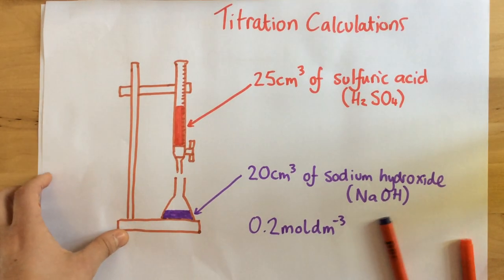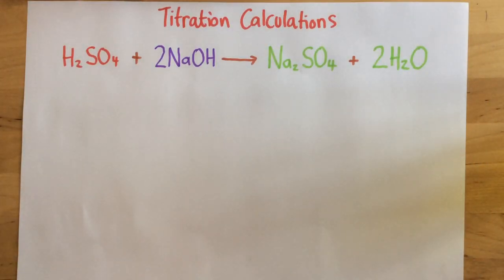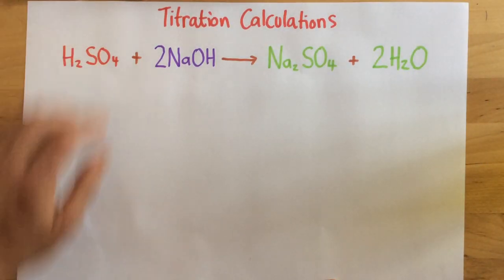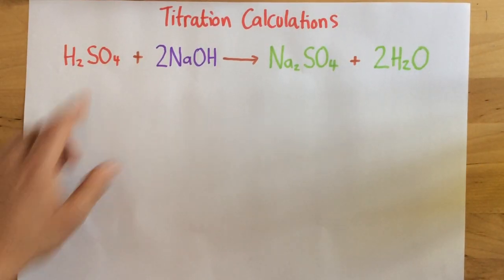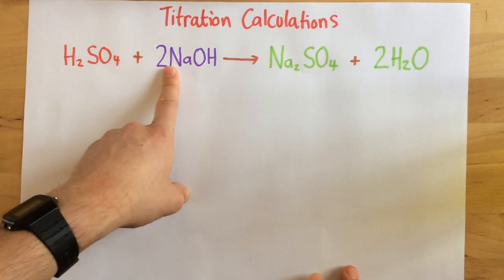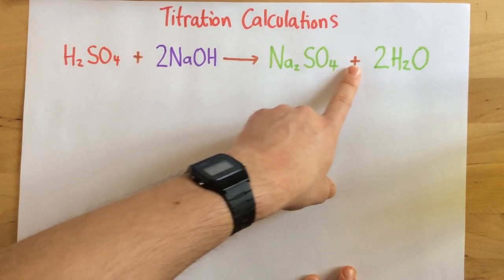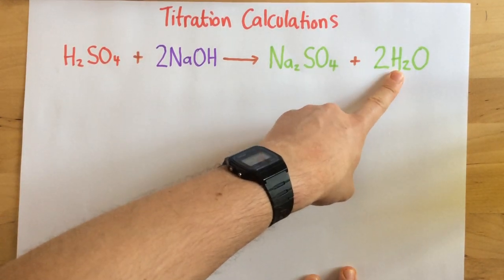The first thing you need to do is write the balanced symbol equation, which I've got right here: sulfuric acid plus sodium hydroxide goes to sodium sulfate plus water.